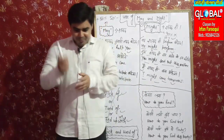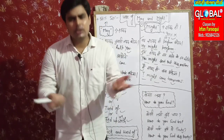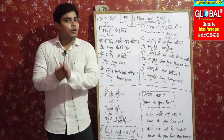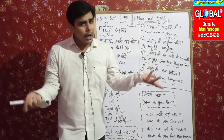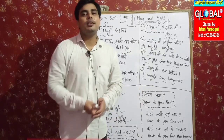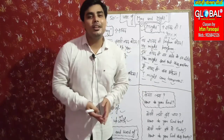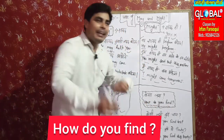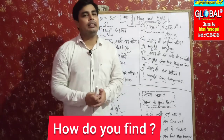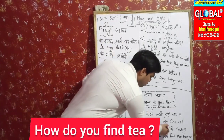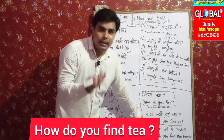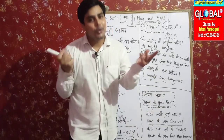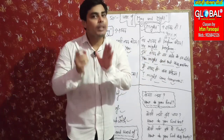Now let's learn 'how do you find.' Suppose a British person visits your home and you offer him tea. You want to ask how he found the tea. You can't say 'kaisi lagi chai' in Hindi — he won't understand. And asking 'is the tea black or white' makes no sense. The simple and common phrase here is 'How do you find?' So you'd say: 'How do you find the tea?' It means 'kaisa laga' — how did you like it?